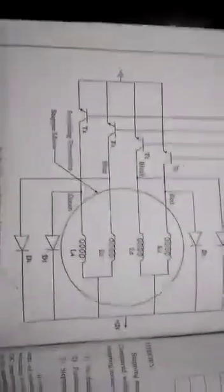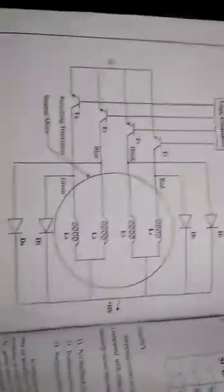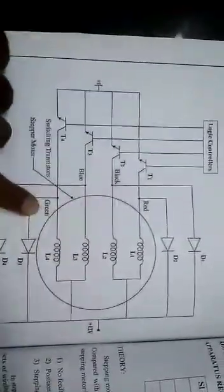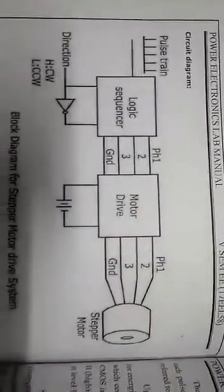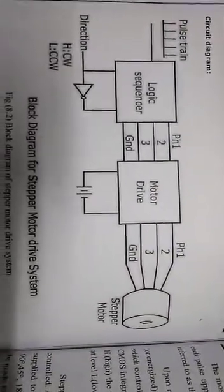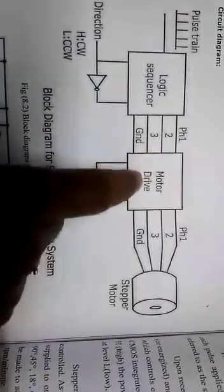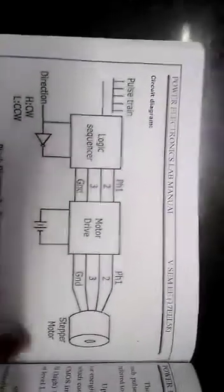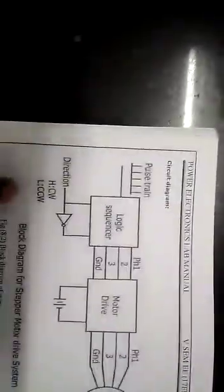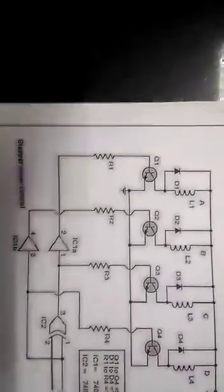This is the circuit diagram of the stepper motor. You can see red, black, blue, and green wires. This is the block diagram of the stepper motor — case one, two, three, and grid. Motor drive logical sequences and stepper motor. This is the direction and this is the stepper motor drive circuit.